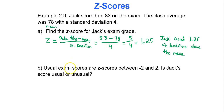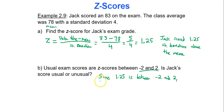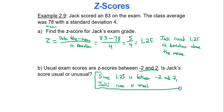Usual, or ordinary, exam scores have z-scores between negative 2 and 2. Is Jack's score usual or unusual? Since 1.25 is between negative 2 and 2, Jack's score is usual. Compare that to a student who scored 4 standard deviations below the mean with a z-score of negative 4 — that would be unusual. Jack's score is usual because 1.25 is within two standard deviations of the mean.